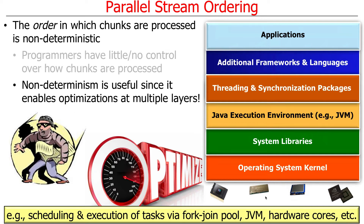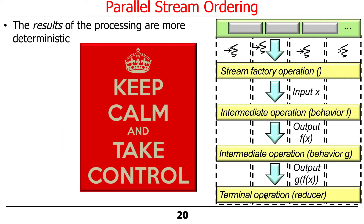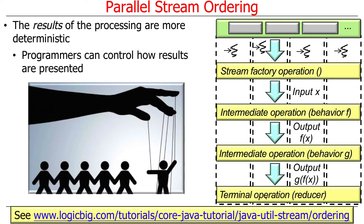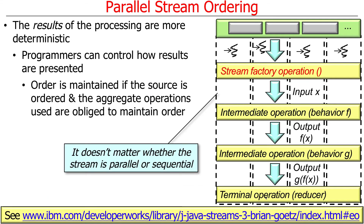The results of the processing, however, are more deterministic. Programmers can actually control largely how the results are presented. Even though you can't control the order of processing, you can control the way in which the results are presented. This is a little complicated, and I had to spend some time writing examples to understand it myself before it really made sense.